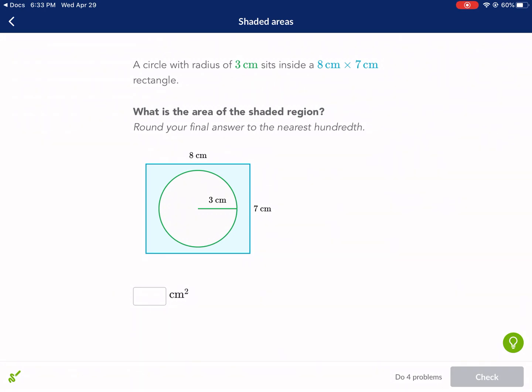Welcome to another episode of West Explains Best. Today we're going to be talking about a Khan Academy exercise called Shaded Areas.